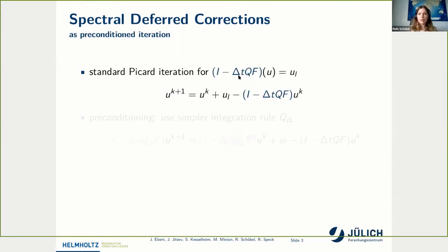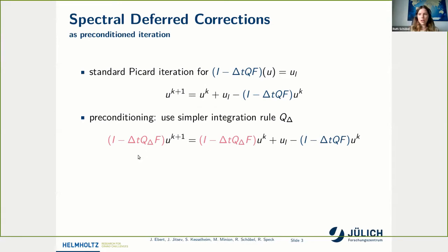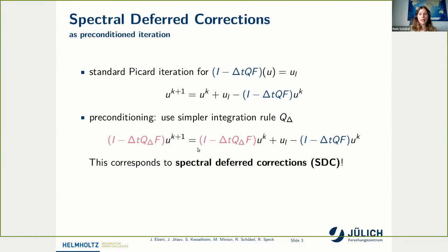We can solve this equation with a standard Picard iteration, and in order to increase the range and speed of convergence, we want to precondition this iteration. In the preconditioned iteration, the preconditioner is marked in red in contrast to the system operator in blue. The difference between the system operator and the preconditioner is just the matrix Q_triangle, which is used instead of the original Q matrix, and we will later see how to set up this matrix Q_triangle. This last formula corresponds to an SDC sweep.